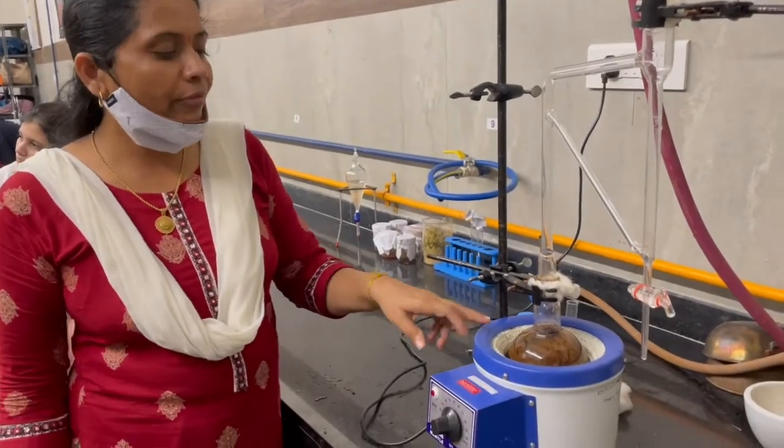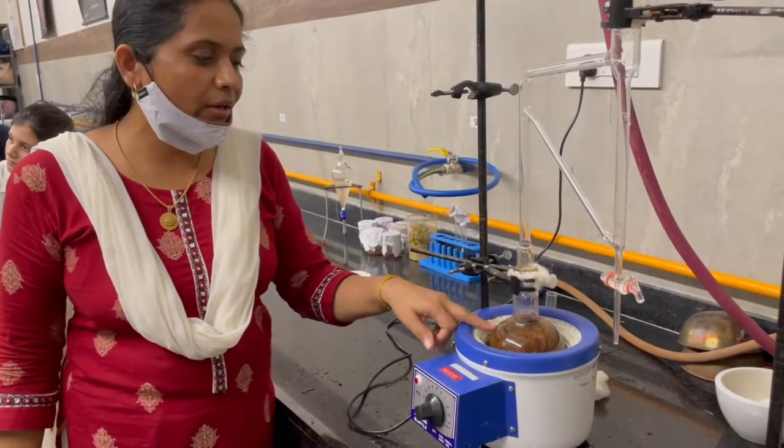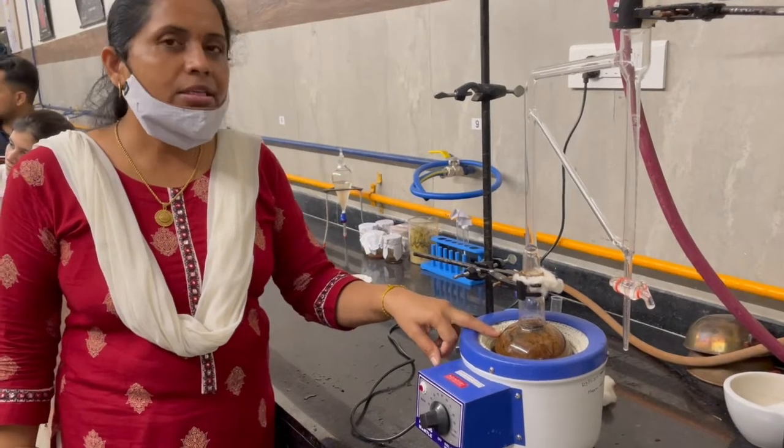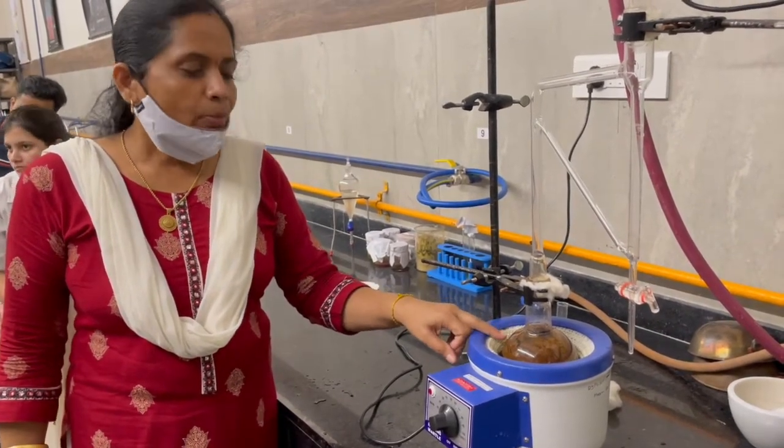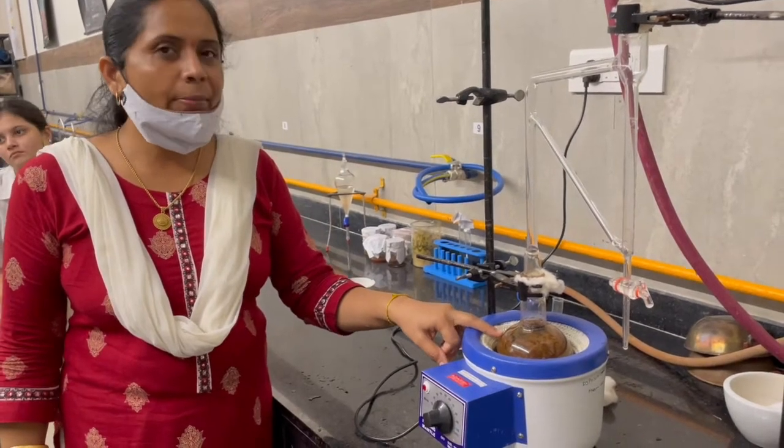First, take 50 grams of clove powder in a flat bottom flask, then add sufficient amount of water in it. Then add some porcelain pieces into it to avoid bumping.